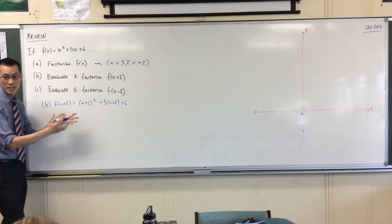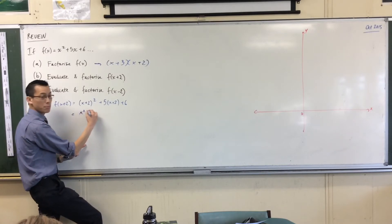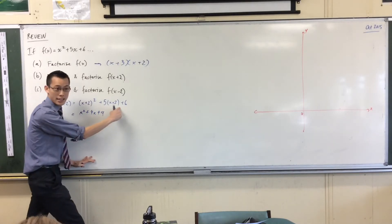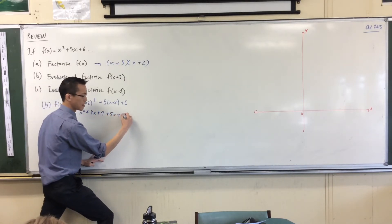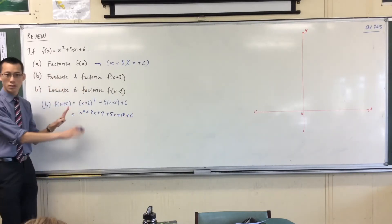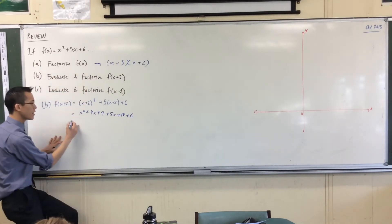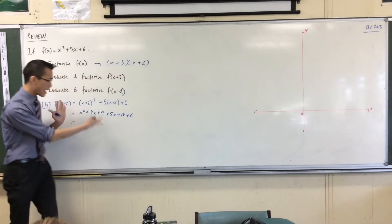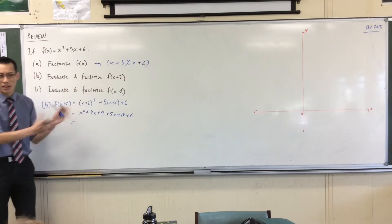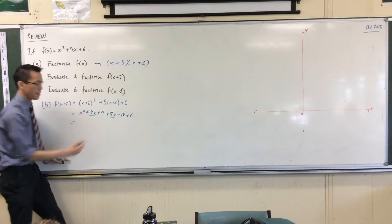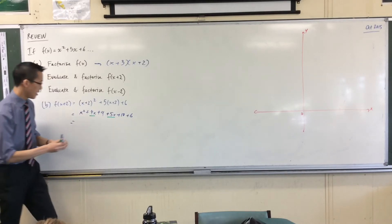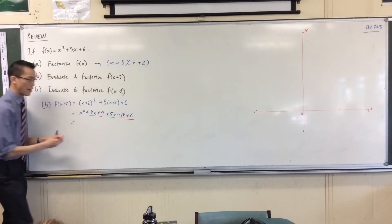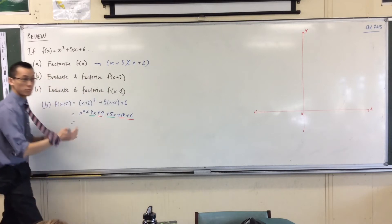X plus 2 all squared, what's the expansion of that? X squared plus 4X plus 4. Here, there's a pretty simple expansion as well. 5X plus 10 plus 6. So far, so good? Okay. So let's have a look at this, tidy this thing up. What like terms have I got? How many X squared terms do I have in the whole thing? One. I just have the one, so I don't have to worry about him. I've got an X term there and an X term there, so they're going to come together. And then you've got a whole bunch of constant terms flying around. One, two, three. Have I counted them all up? Yeah. Does that look good? Okay, so let's collect them.